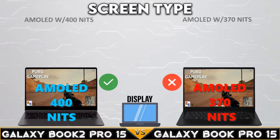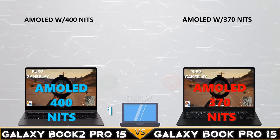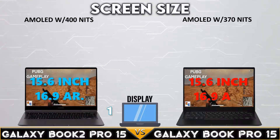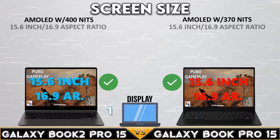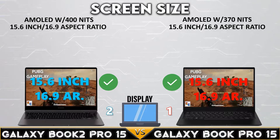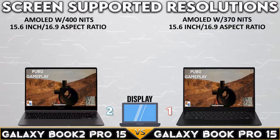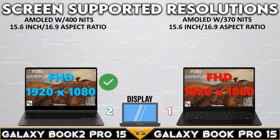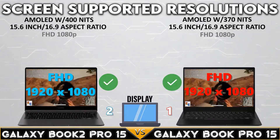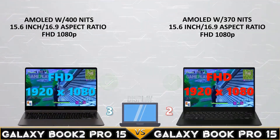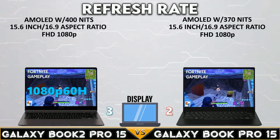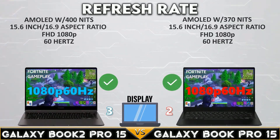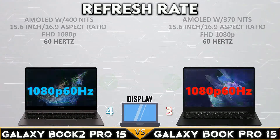The Galaxy Book 2 Pro 15 has an AMOLED display with up to 400 nits brightness. Both models have a 15.6-inch display with a 16:9 aspect ratio, FHD 1080p display resolution, and both laptops have a 60 Hz refresh rate.